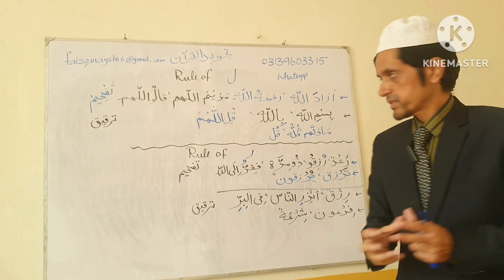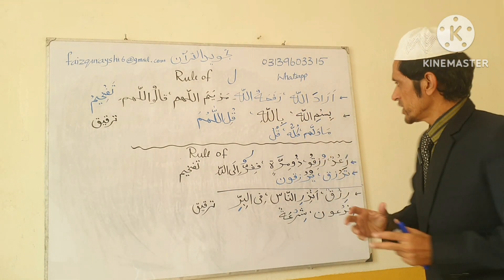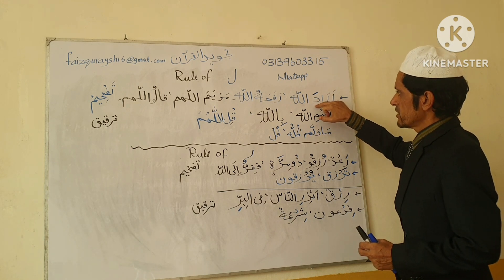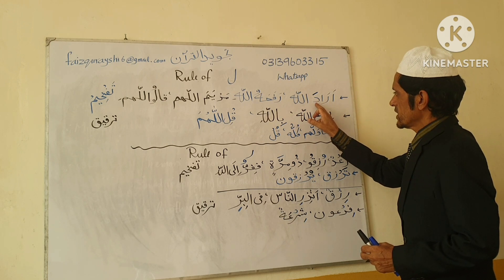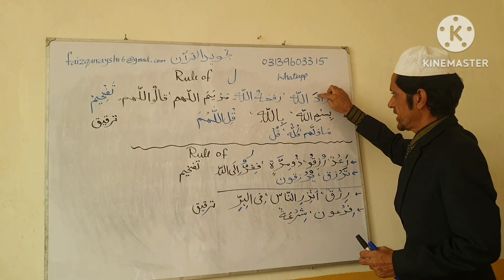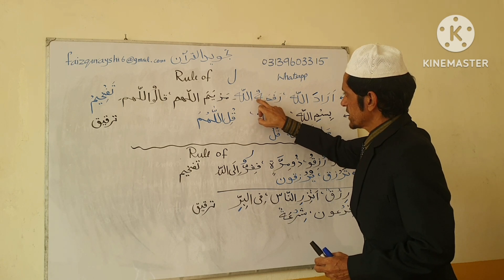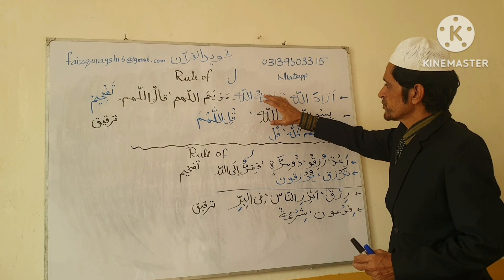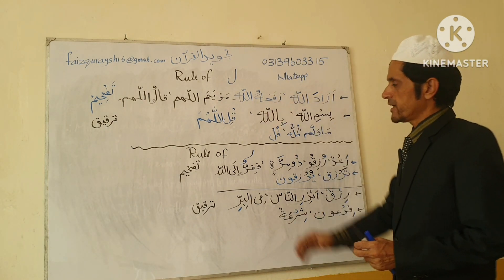The rule of Lam relates to the Lam which is in Allah or Allahumma. The rule is: whenever before the name of Allah, if there is Fathah or Dhamma on the preceding letter, we will read the name of Allah with Tafkhim. For example, if before Allah there is a letter with Fathah — this symbol is Fathah. Or before Allahumma, if the preceding letter has Dhamma — this symbol is Dhamma.